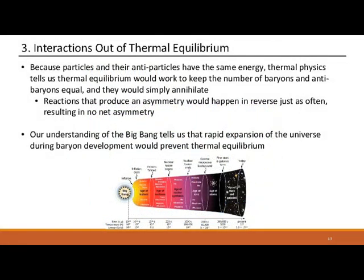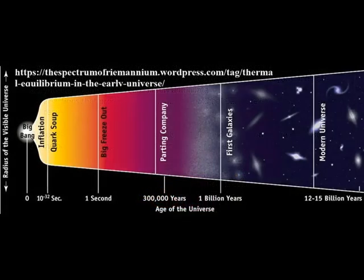3. Interactions out of thermal equilibrium. In the out-of-equilibrium decay scenario, the last condition states that the rate of a reaction which generates baryon asymmetry must be less than the rate of expansion of the universe. In this situation the particles and their corresponding antiparticles do not achieve thermal equilibrium due to rapid expansion decreasing the occurrence of pair annihilation. In short, baryon number violation is necessary to produce an excess of baryons over anti-baryons. C-symmetry violation is also needed so that interactions producing more baryons will not be counterbalanced. CP symmetry violation is similarly required because otherwise equal numbers of left-handed baryons and right-handed anti-baryons would be produced. Finally, the interactions must be out of thermal equilibrium, since otherwise CPT symmetry would assure compensation between processes increasing and decreasing the baryon number.